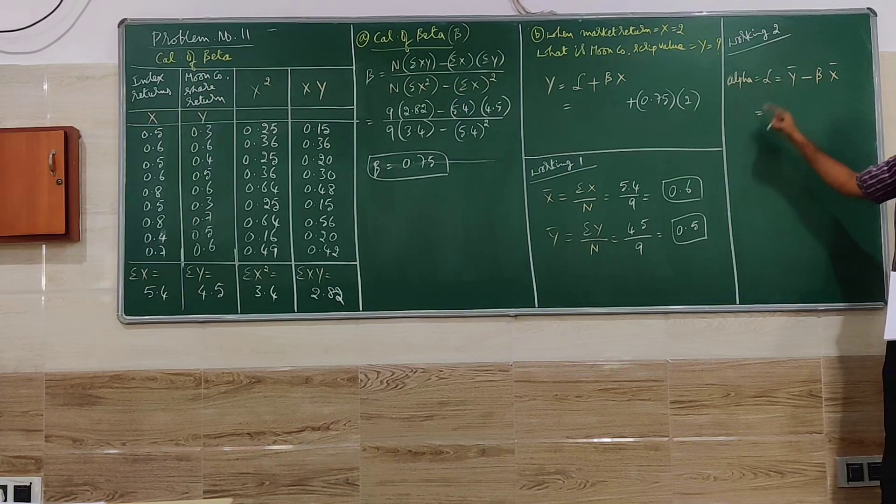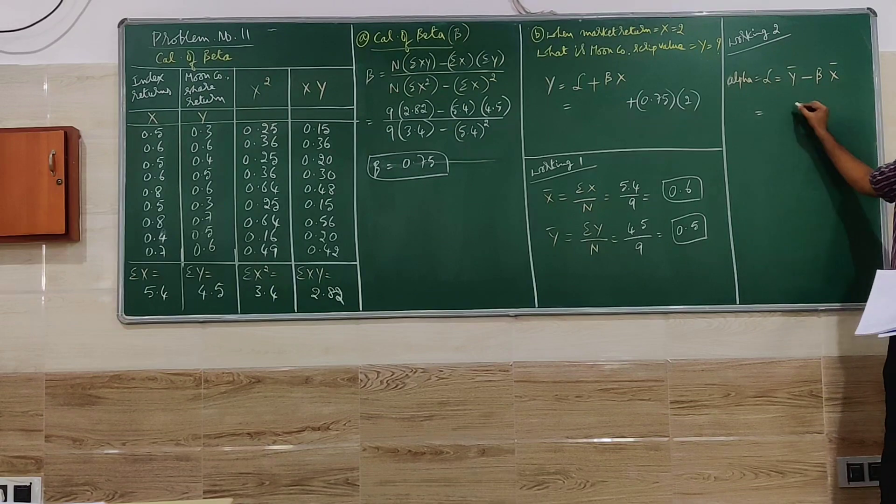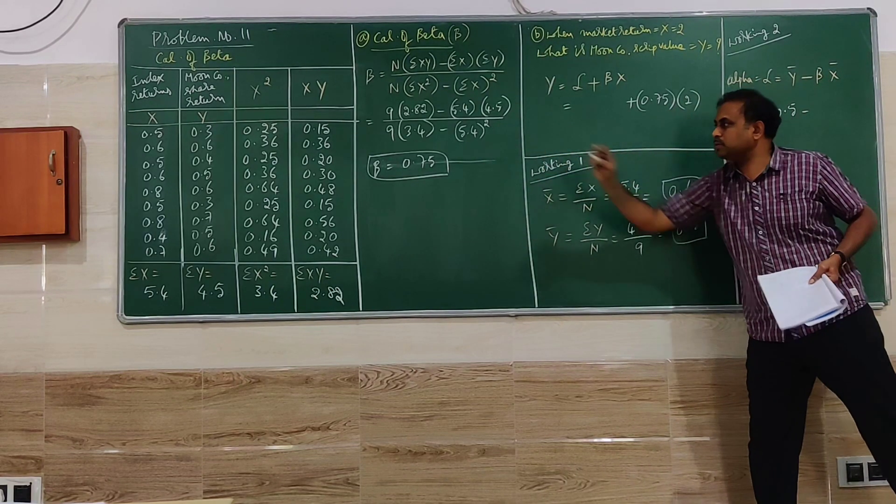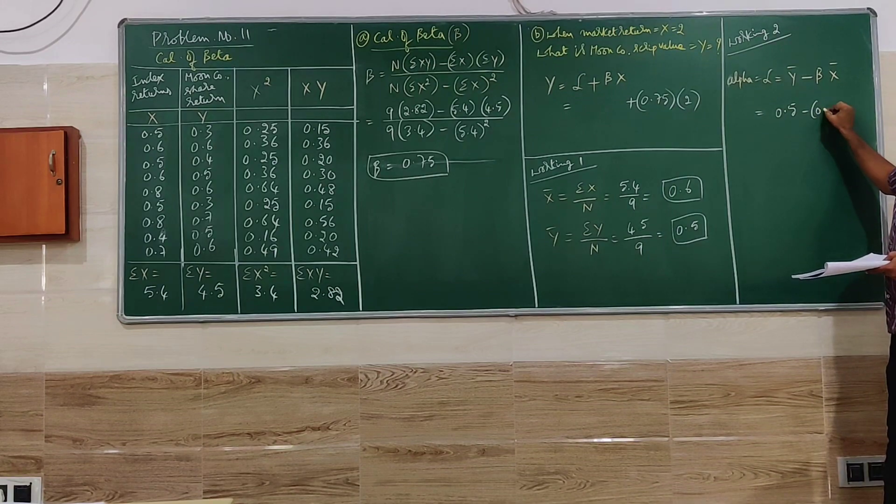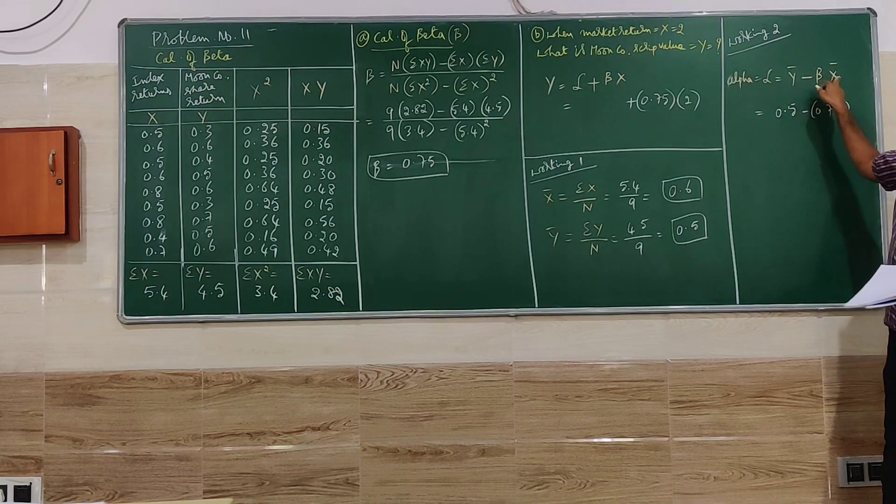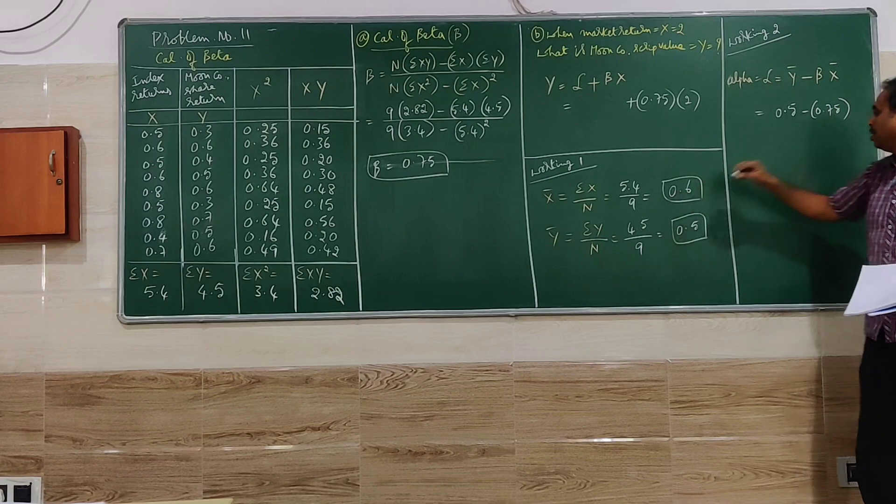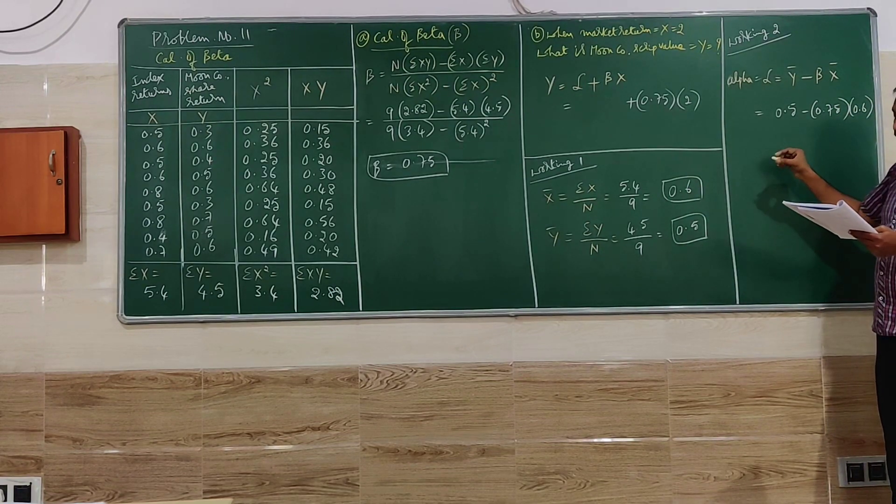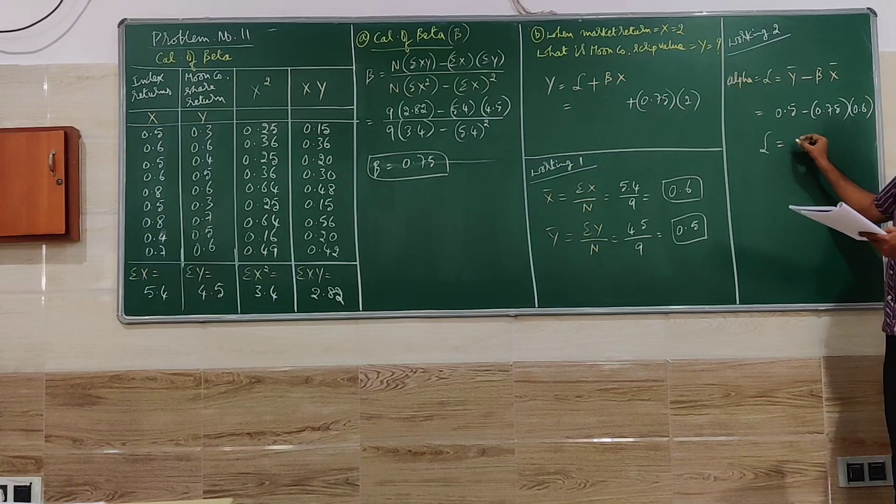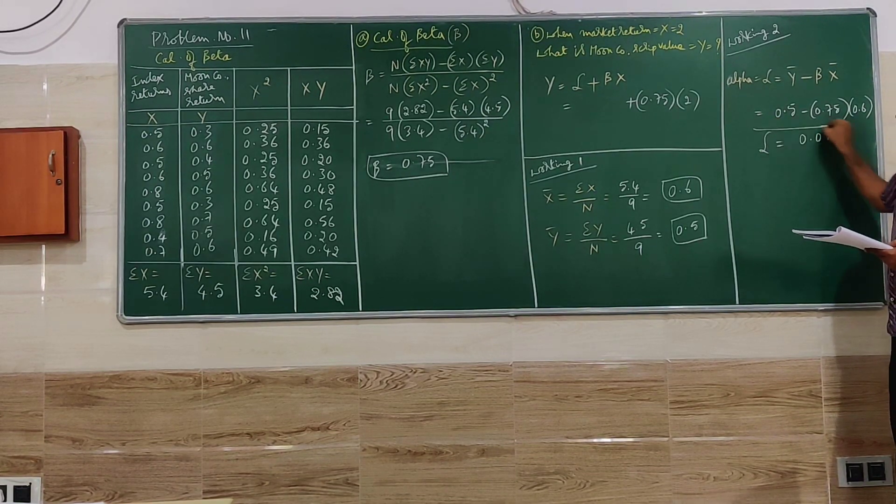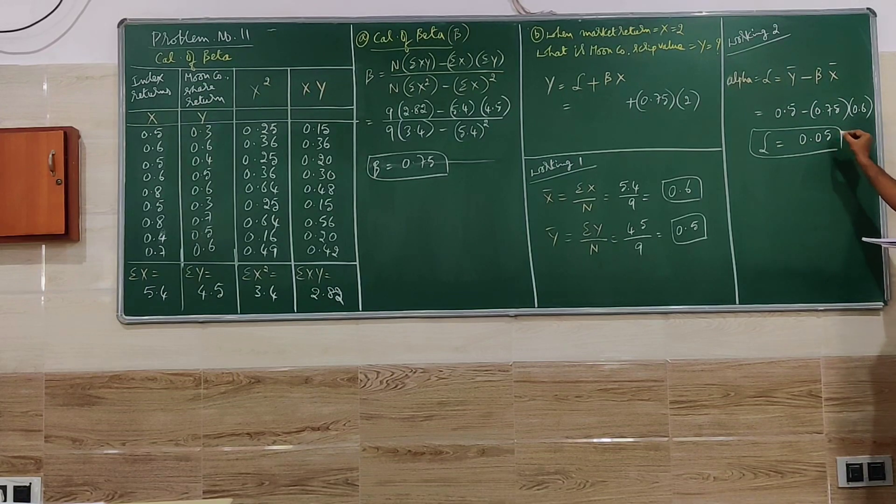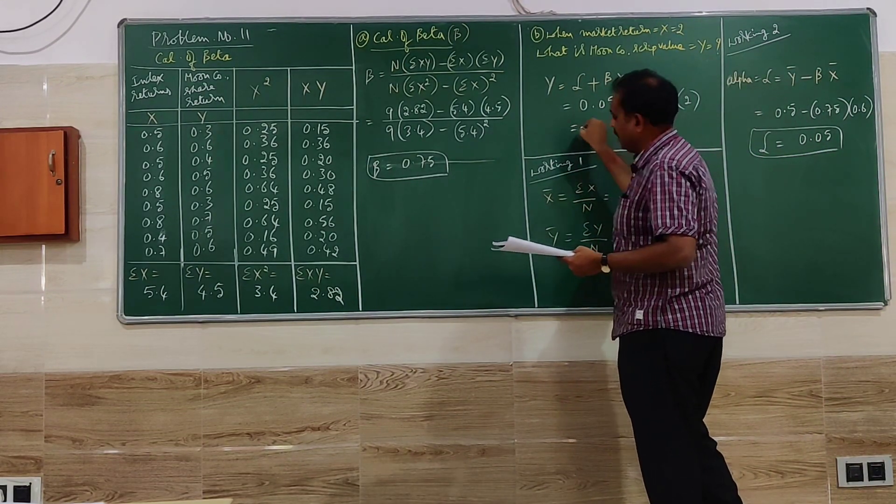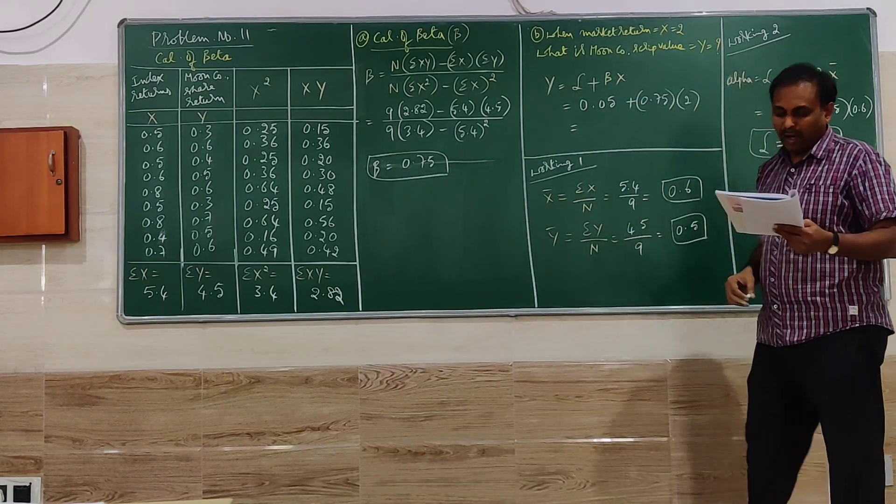Alpha: when you go for Y dash or Y bar 0.5 minus beta value 0.75 multiplied with X bar 0.6. When you go for simplification we get 0.05. This 0.05 we will take it here and find the value of Y.